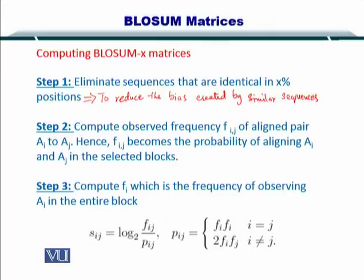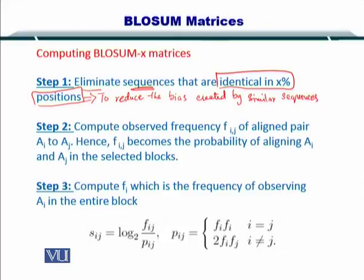To compute the BLOSUM matrices, the first thing you need to do is eliminate similar sequences in the block — that is, eliminate those sequences that are identical in X percent of positions. We only keep one representative sequence from sequences that are very similar to each other. This will help reduce the bias created by similar sequences within the block. If you do not do this, the scoring matrix will be heavily biased towards those similar sequences.